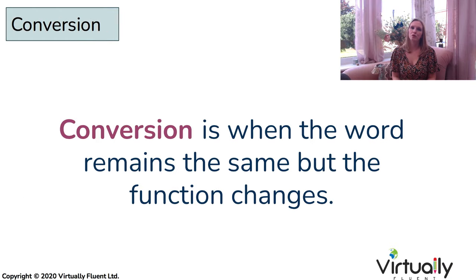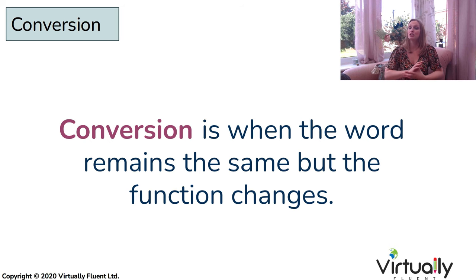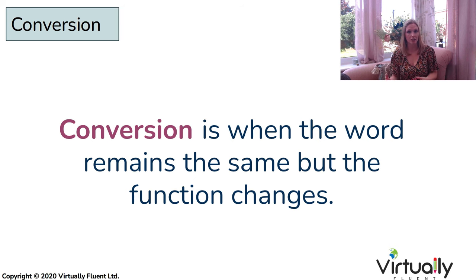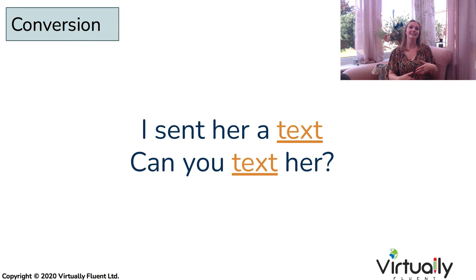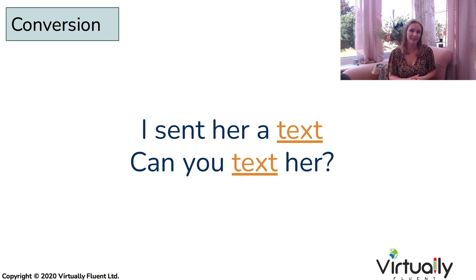Now we're going to move on to conversion in English, which is actually the easiest technique — because here we do not change the word. We don't add letters, we don't take any letters away. The word remains exactly the same, but the function of the word is different. Let's take this example: 'I sent her a text.' Here the word 'text' is used as a noun. We know that because of its position in the sentence and the fact we have an article, 'a', before it.